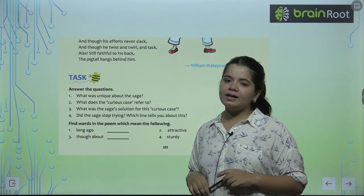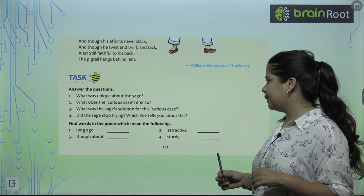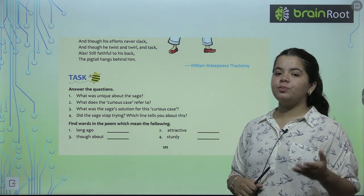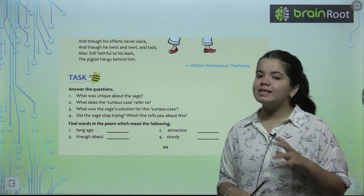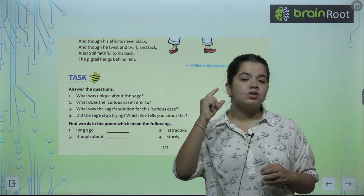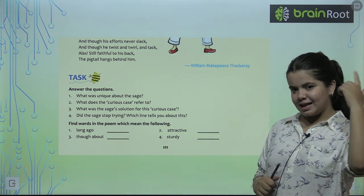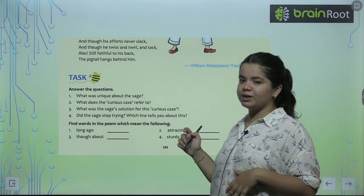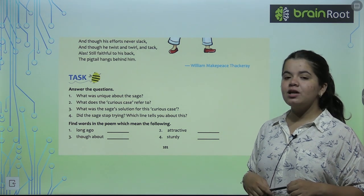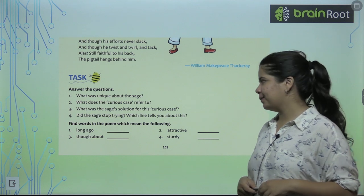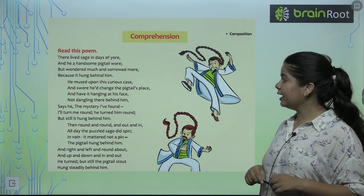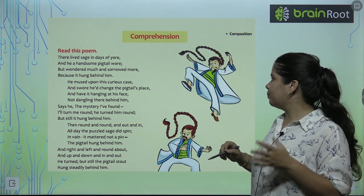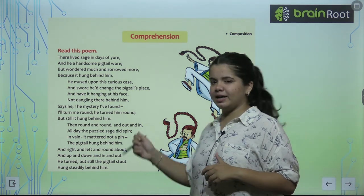Now we have the task. In the task, what do you have to do? You've been asked some questions from this passage, you need to answer them. So the first question is: What was unique about the sage? The most important thing you have to write is his handsome pigtail, which was always flicking about, round and out on his back. So his pigtail was his unique thing. What does the curious case refer to? The curious case was about the pigtail who never ever left his back. What was the sage's solution for the curious case? And swore he'd change the pigtail's place. So what did he think? That now I'll change my pigtail's position - instead of back, I'll keep it in front. So this was the solution he came up with.